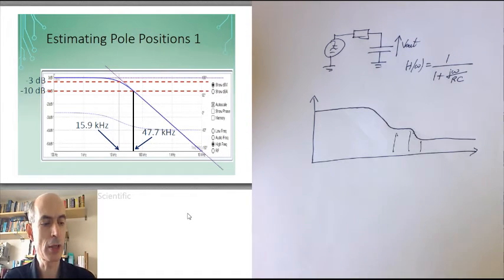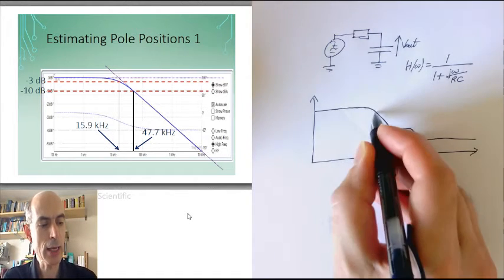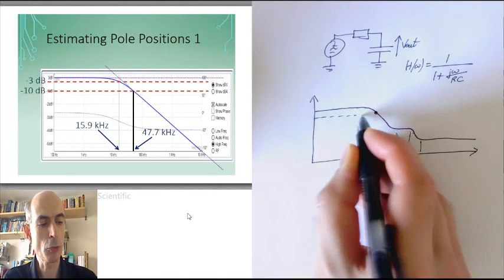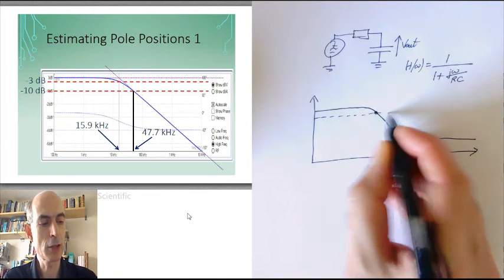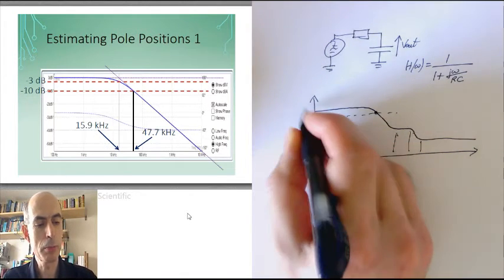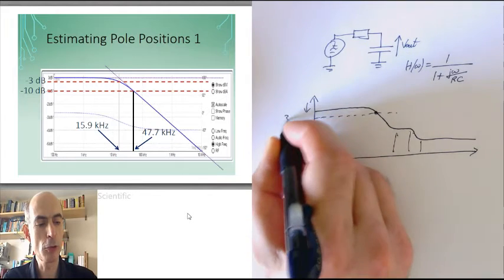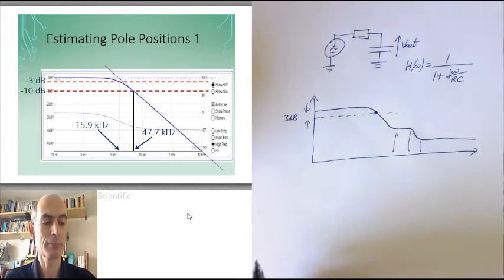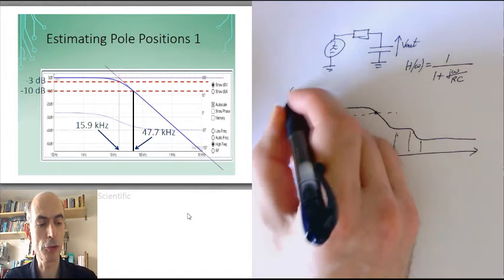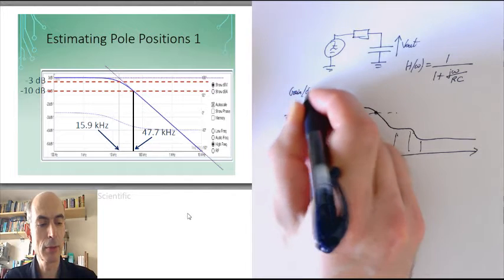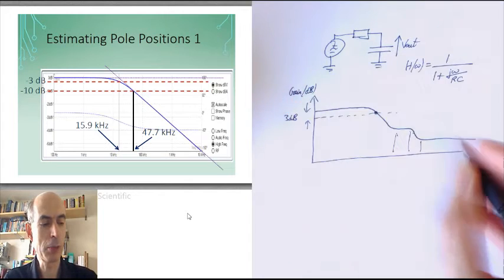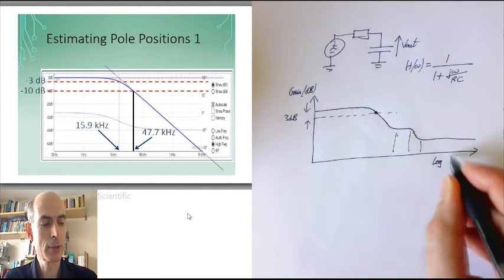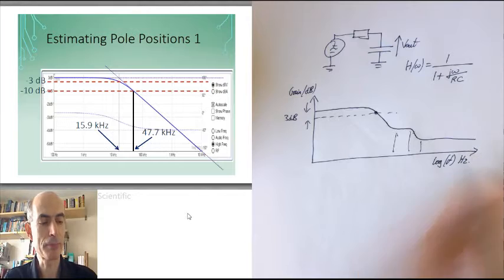Now what do we do? One way to proceed is to look at the 3 dB point — that's the point where the gain has dropped by 3 dB from its low frequency value. I've forgotten to label my axes again. Always label axes with units: log of frequency in hertz.